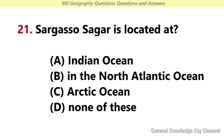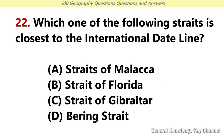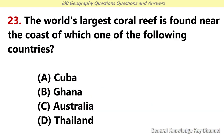Sargasso Sea is located at? Answer B: In the North Atlantic Ocean. Which one of the following states is closest to the international date line? Answer D: Brink State. The world's largest coral reef is found near the coast of which one of the following countries? Answer C: Australia.